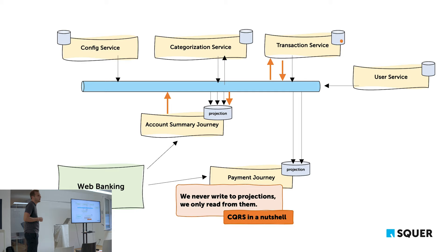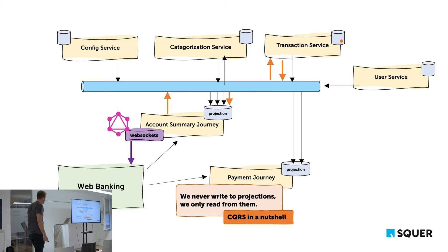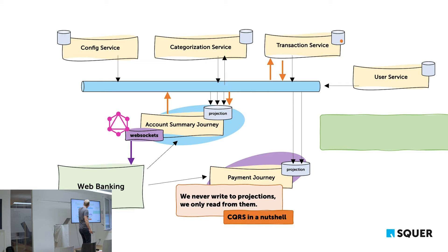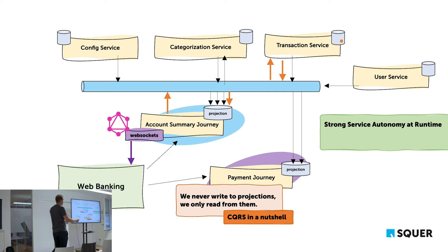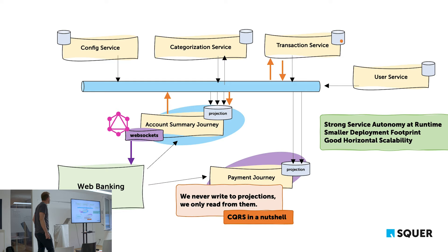We still had HTTP as a synchronous bottleneck on the frontend side. We usually replace it with WebSockets to push information to the frontend. GraphQL is a popular tool here because it supports subscriptions as a first-class citizen. The result: strong service autonomy, less chattiness between services at runtime, smaller deployment footprints, and massively improved horizontal scalability.